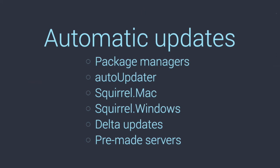With Squirrel Windows it's pretty different — you don't need a server at all. It could be static files on S3 or even locally on disk, which is handy for testing. That's not possible with Squirrel Mac. There are benefits to each. With Squirrel Windows you can have delta updates — instead of downloading a whole new app, it downloads a binary diff between the current version and the next version, patches the binary, and you have the new version. That saves bandwidth.